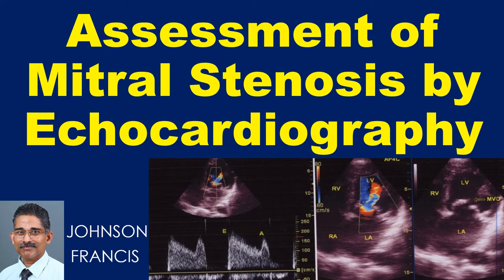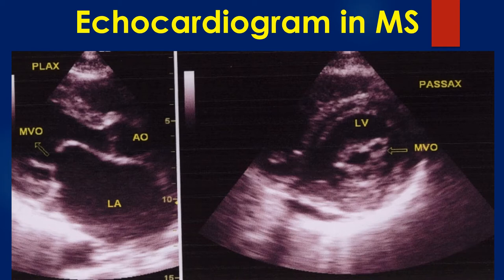Assessment of mitral stenosis by echocardiography. The right panel shows the parasternal long axis view. Doming of the anterior mitral leaflet is seen well and has the appearance of a hockey stick. This appearance is classical of rheumatic mitral stenosis.